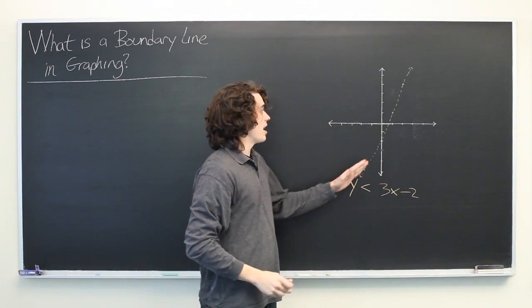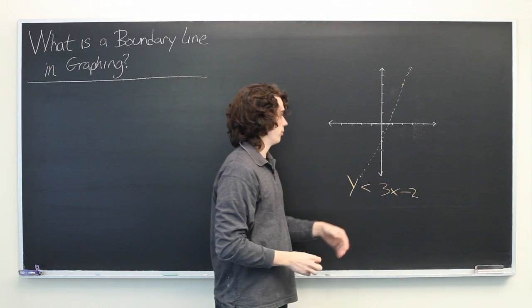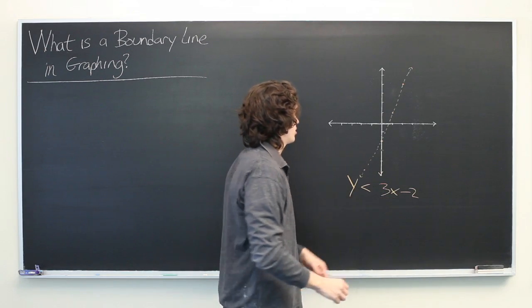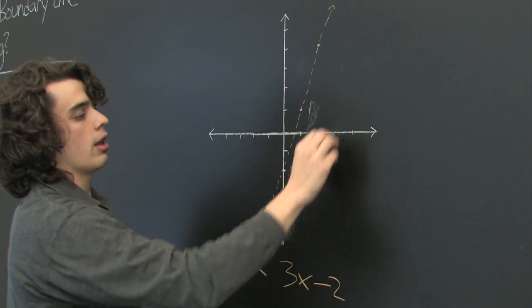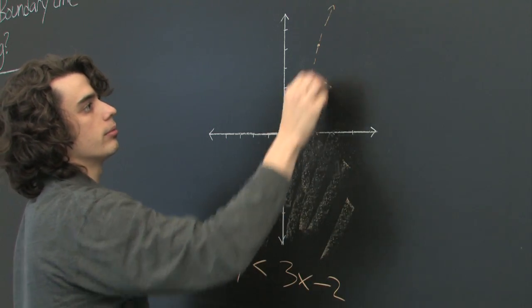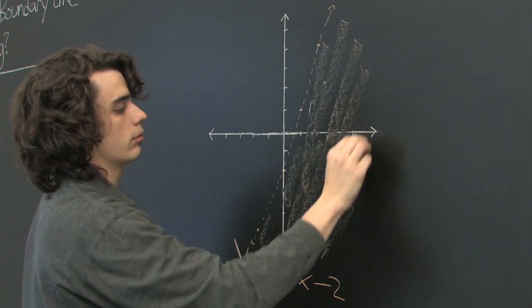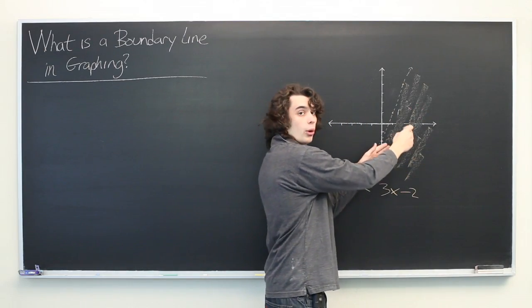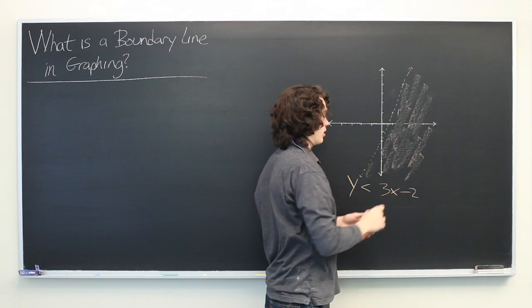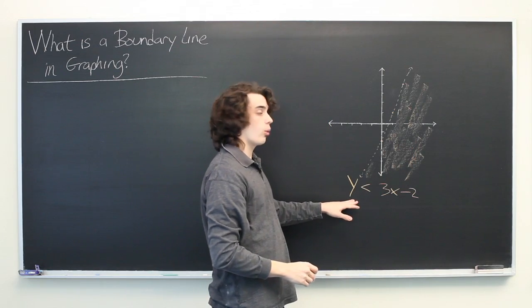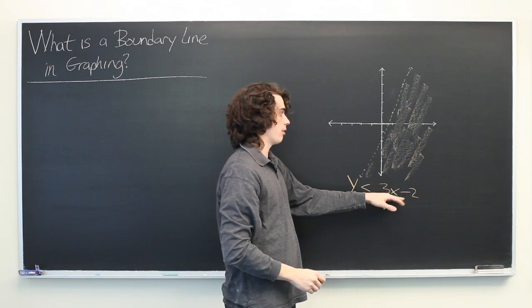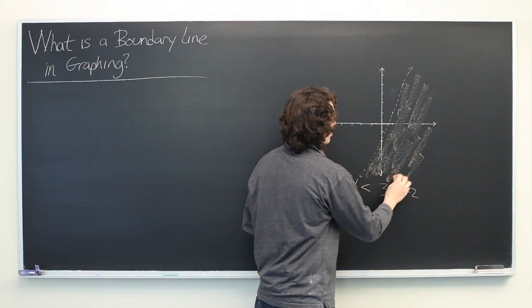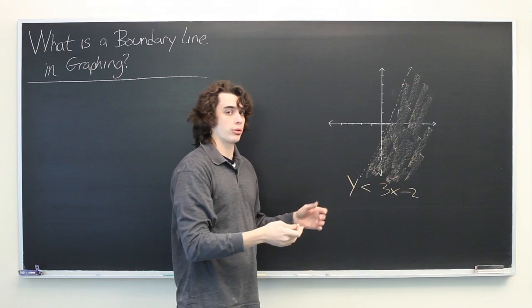This indicates the edge of the range of values for which this is true. And since y is going to be less than this, we can fill in this side of the graph. So, what this tells us is that for every point within this region here that I've shaded, the y coordinate will be less than 3 times the x coordinate minus 2. And then this line that we graphed earlier is our boundary line.